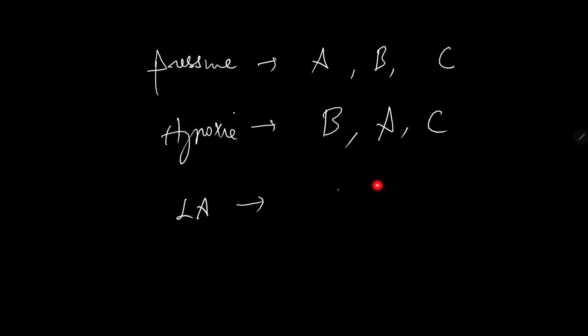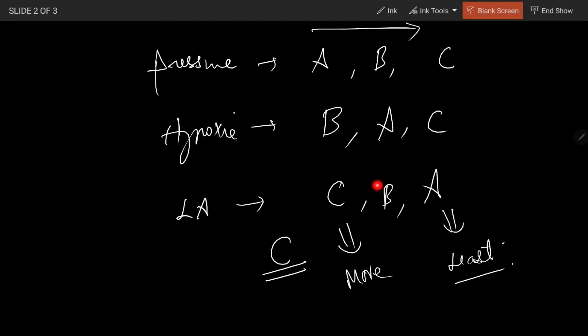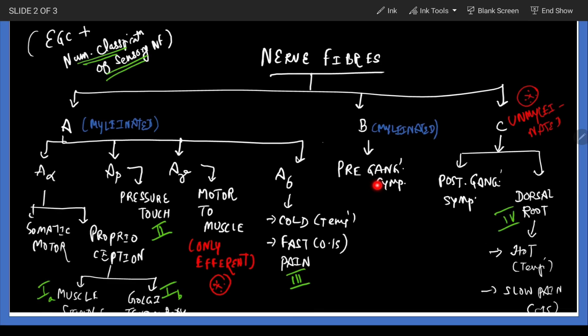Lastly is local anesthesia. The local anesthetic ends in C, so it's C, B, and A. This order means these fibers are most susceptible, and these are least susceptible. Thank you so much for your patient listening.